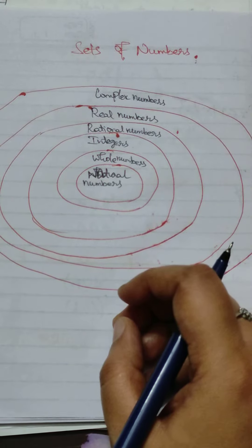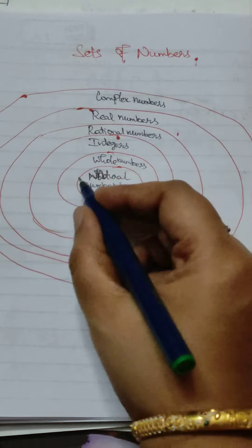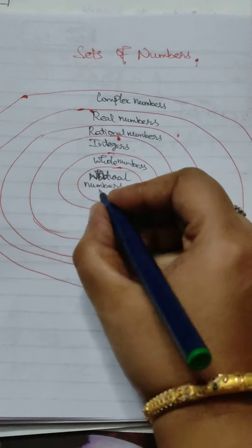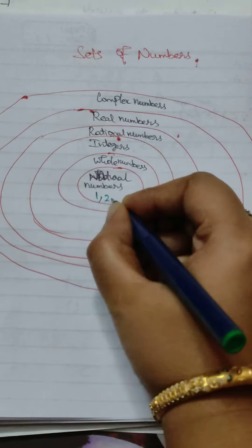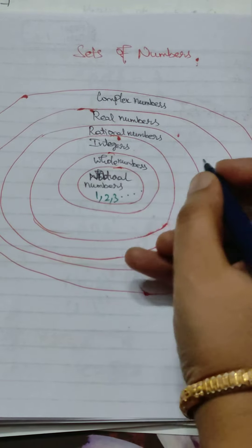So, this is the sets of numbers. The first thing is natural numbers. Natural numbers can be 1, 2, 3, and so on, up to infinity.